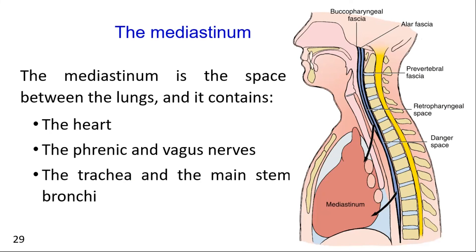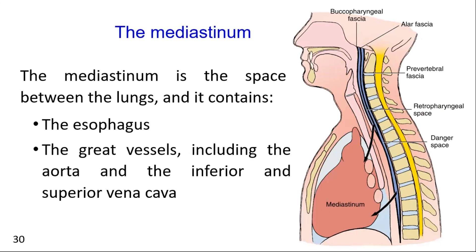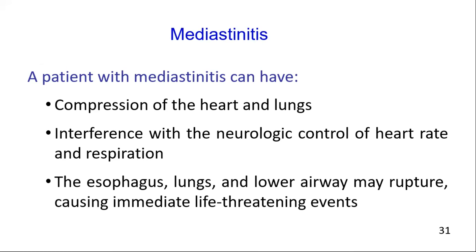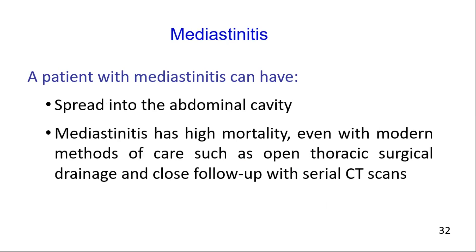The mediastinum is a large cavity located between the lungs, containing the heart, phrenic nerve, vagus nerve, trachea, mainstem bronchi, esophagus, and great vessels — that is, the aorta and the superior and inferior vena cava. Infections may progress to involve the mediastinum, causing mediastinitis, and clinically this presents with a critically ill appearance due to compression of the heart and lungs. Due to possible neural compression, vagus nerve innervation of the cardiovascular and respiratory systems may be interrupted, and the esophagus, lungs, and lower airway may rupture, causing immediate life-threatening events. Despite immediate cardiothoracic surgical intervention, the mortality of mediastinitis remains high.